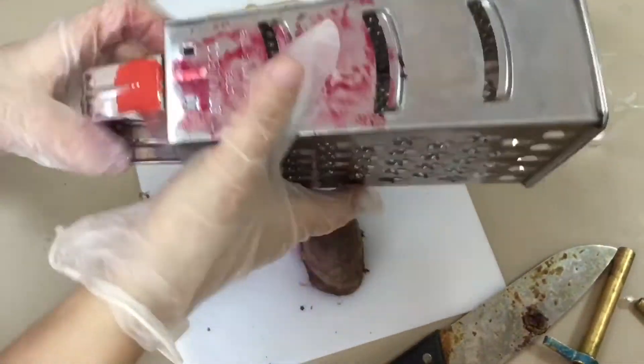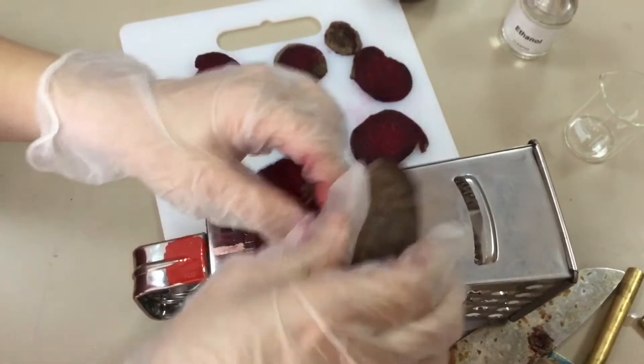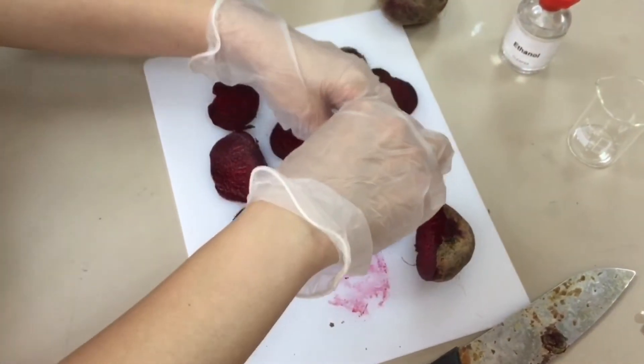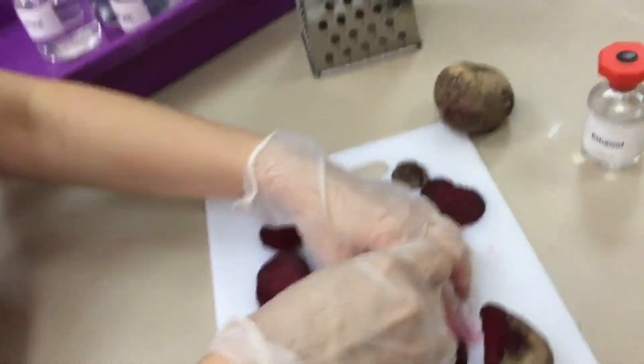We can then decant the alcohol containing the pigment and we can use a colorimeter and measure the absorbance through it, and that will give us an idea of how leaky those cells have become.